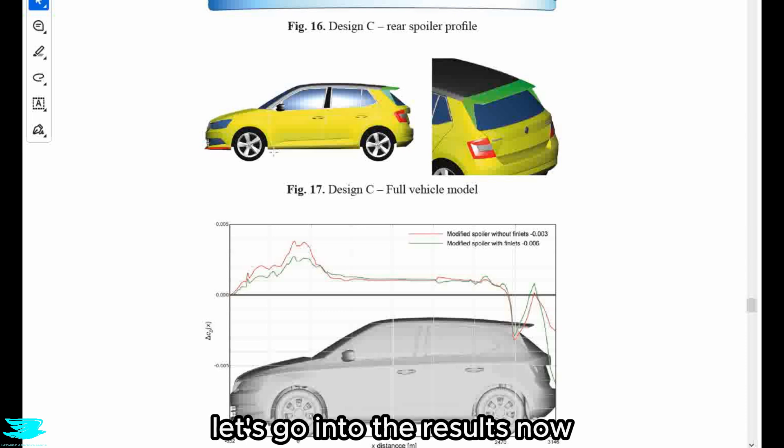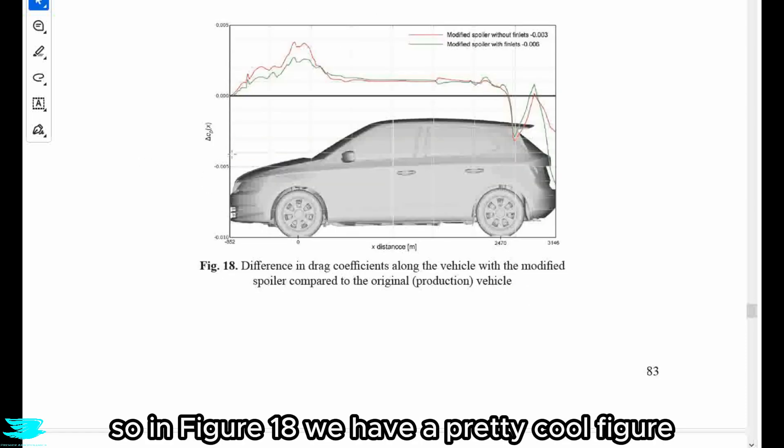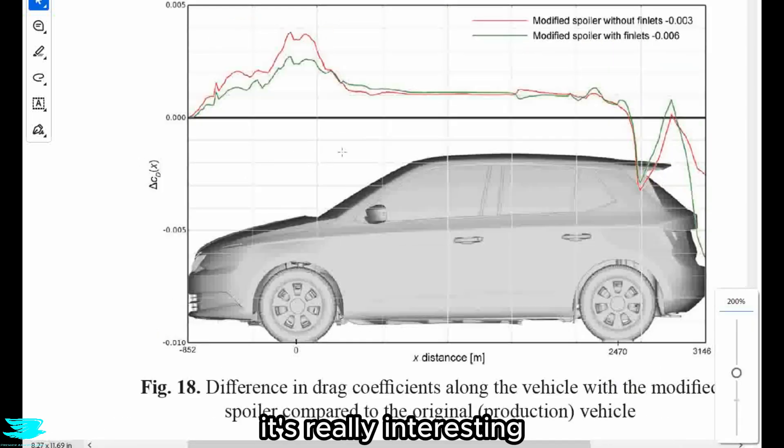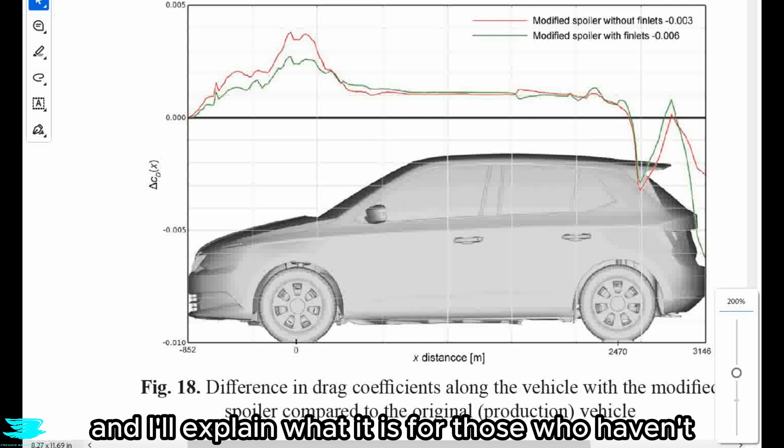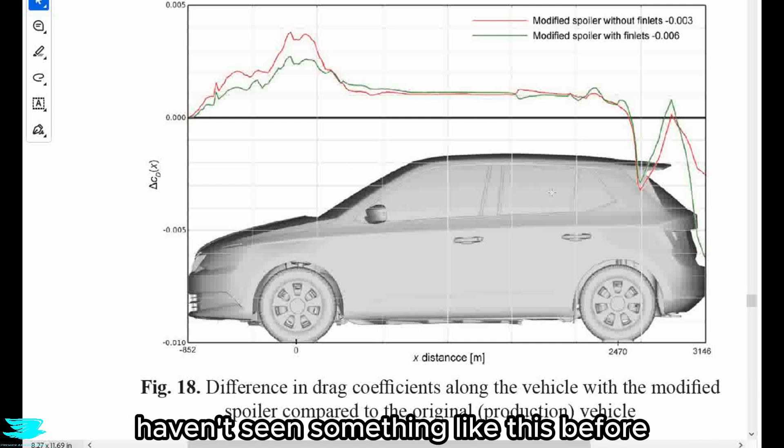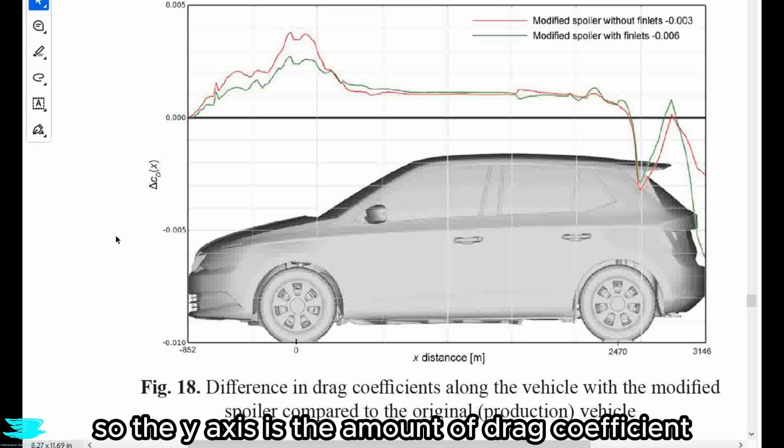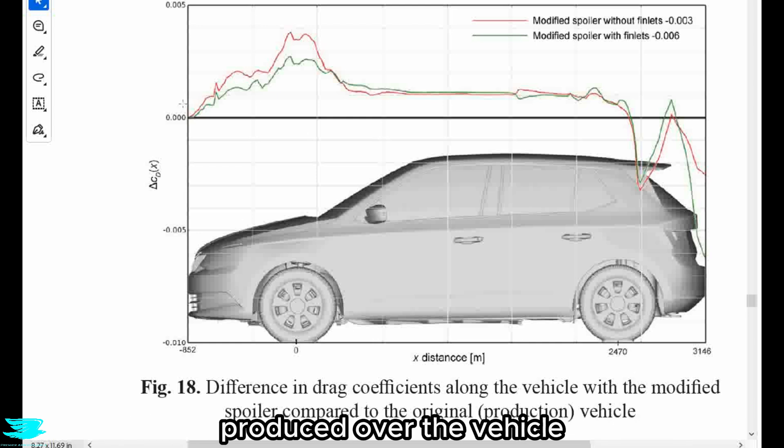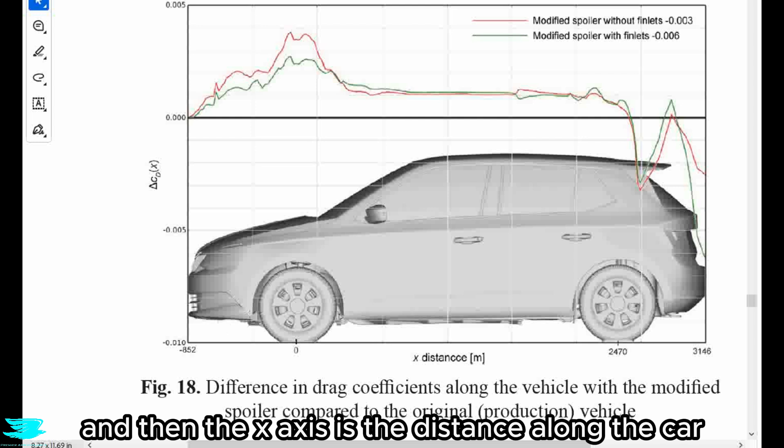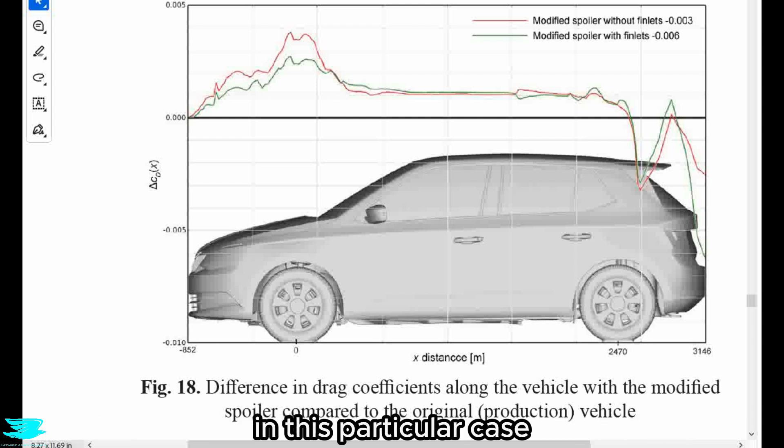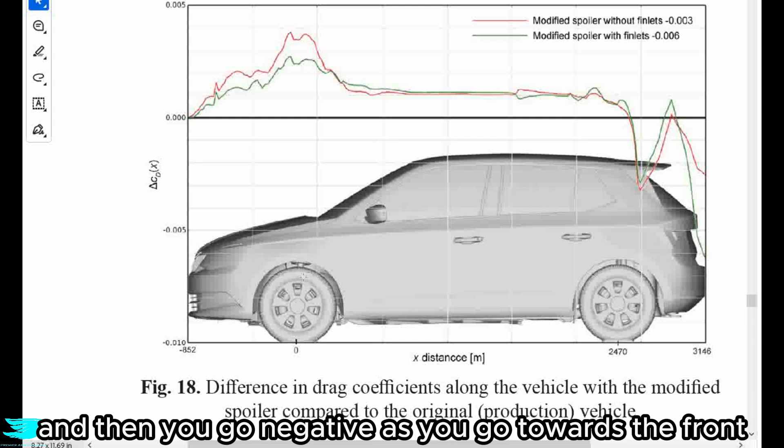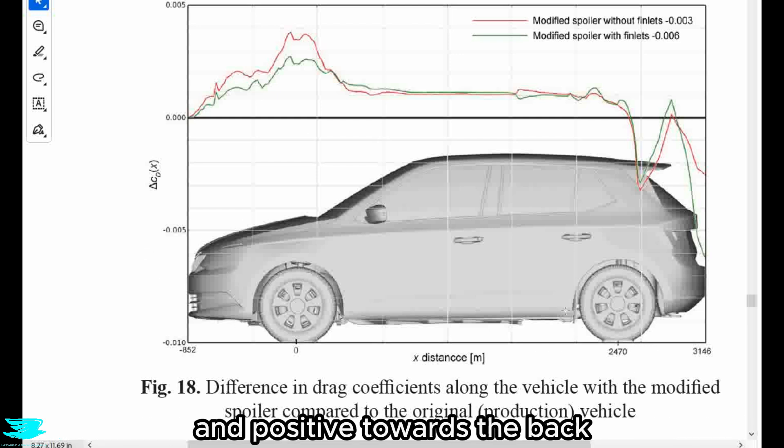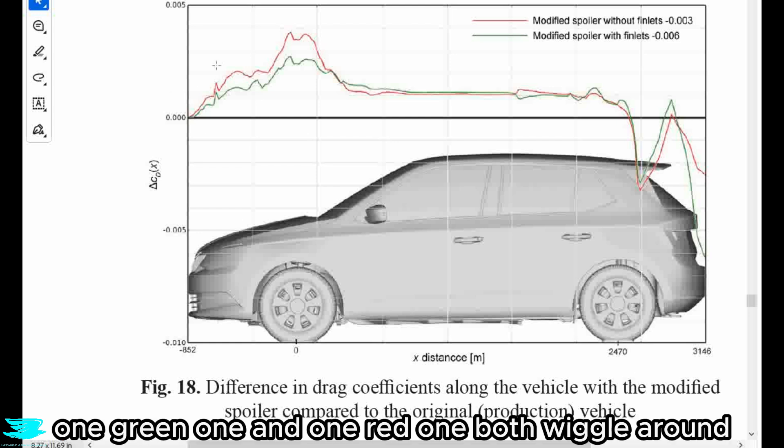So anyway, let's go into the results now. In figure 18, we have a pretty cool figure. It's really interesting. And I'll explain what it is for those of you who haven't seen something like this before. So the y-axis is the amount of drag coefficient produced over the vehicle. And then the x-axis is the distance along the car. In this particular case, zero is centered on the front axle, and then you go negative as you go towards the front and positive towards the back.